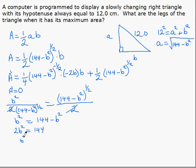which is B squared equals 144 over 2, so 72,